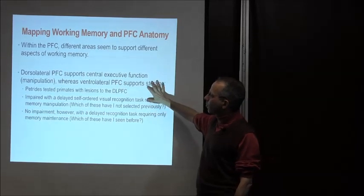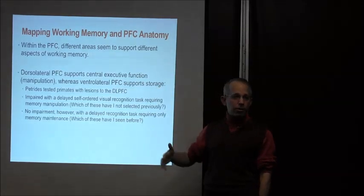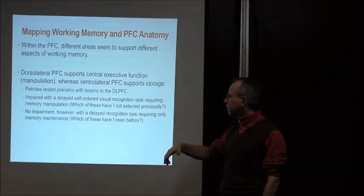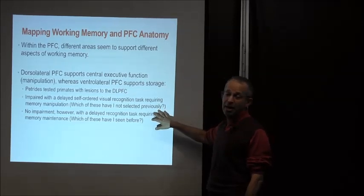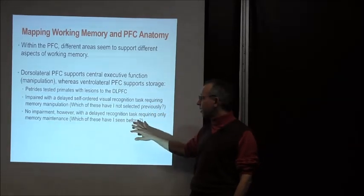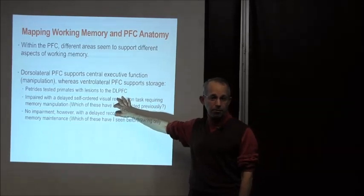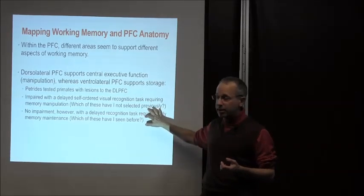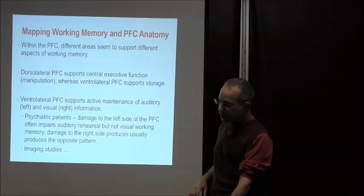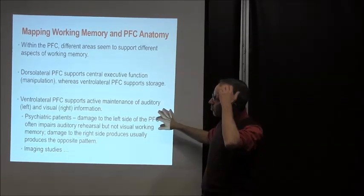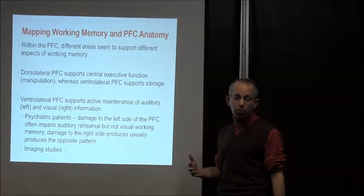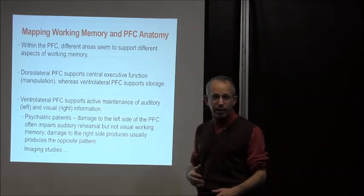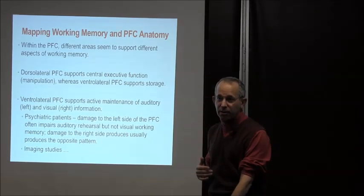The dorsolateral prefrontal cortex supports executive function while the ventral lateral supports storage. Double dissociations confirm this: a dorsolateral lesion will interfere with manipulation tasks like the self-ordered task but not with simple delayed recognition requiring only memory maintenance. In contrast, patients with ventrolateral damage have problems actively maintaining auditory or visual information depending on the specific location of damage — producing selective deficits to either the phonological loop or the visuospatial sketchpad.